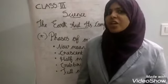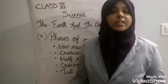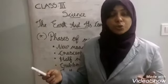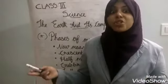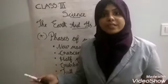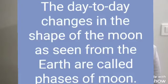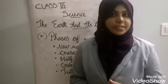Every night the shape of the moon is different. Actually, the moon does not really change its shape. This is due to the revolution of the moon around the earth. That is why we feel that the moon changes shape. The day-to-day changes in the shape of the moon as seen from the earth are called phases of moon.